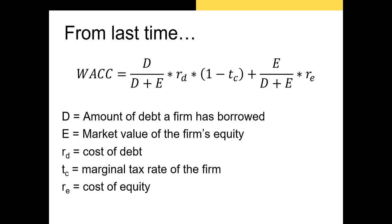This, as you saw in the previous video, is our weighted average cost of capital formula. Our D is the amount of debt that the firm has borrowed, and we typically calculate that as the total liabilities on the firm's balance sheet. Our R sub D is our cost of debt — that's usually going to be the yield to maturity on the firm's most recently issued bond. Our T sub C is our marginal tax rate for the firm, which is the tax rate in the firm's top tax bracket. E is going to be our market value of the firm's equity.